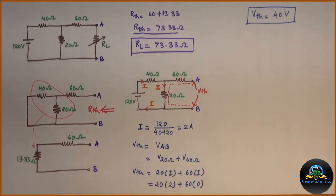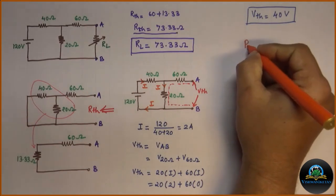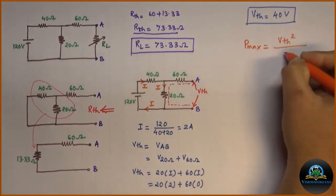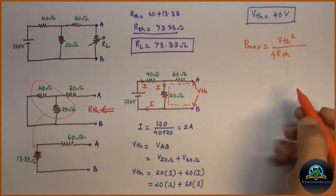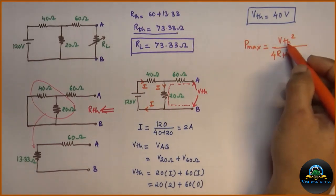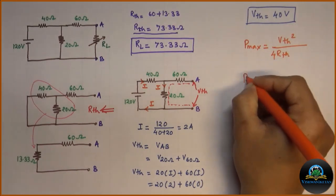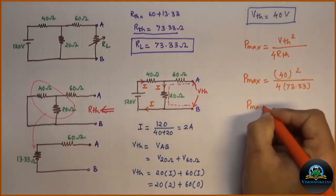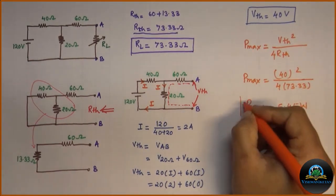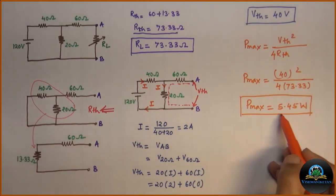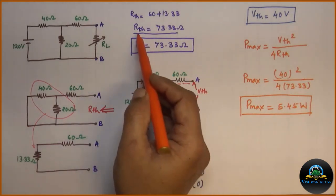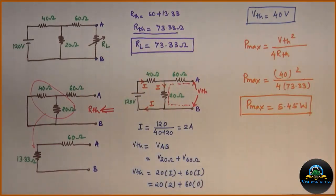From this, we can calculate Pmax as the formula for Pmax is VTH square divided by 4 into RTH. Substitute value of VTH and RTH. Then we will get Pmax as 5.45 watt. This is the maximum power transferred from source to load when RL is equal to equivalent resistance RTH, which is proved from the theorem.